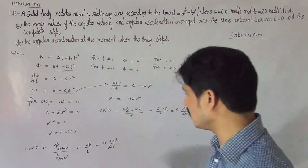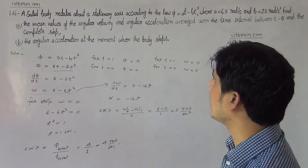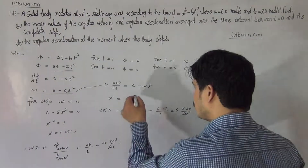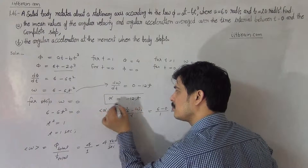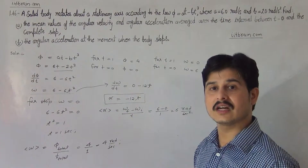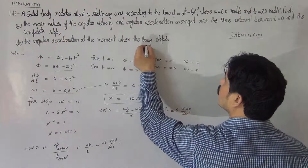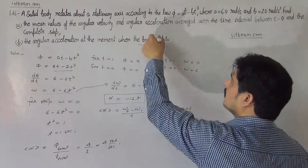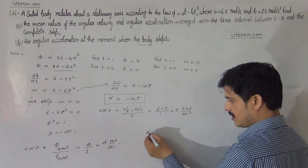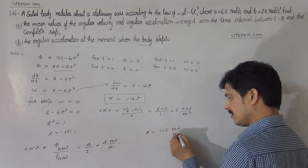The third and final part is the angular acceleration at the moment when the body stops. The expression for instantaneous angular acceleration is α = -12T. Since the body stops at T = 1 second, we substitute T = 1, giving α = -12 radian per second squared.